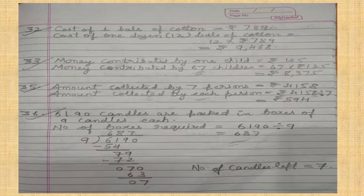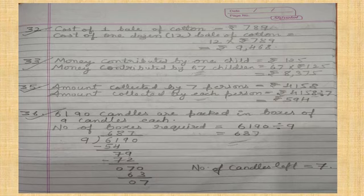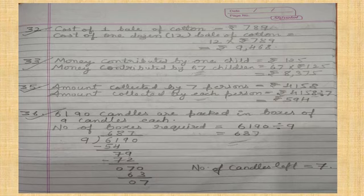Question thirty-three: All sixty-seven students of Class 4 plan to go on a picnic, and each contributes rupees one hundred twenty-five. How much amount has been collected? Write: amount collected by one child equals rupees one hundred twenty-five. Money contributed by sixty-seven children equals sixty-seven into rupees one hundred twenty-five. The answer is eight thousand three hundred seventy-five.